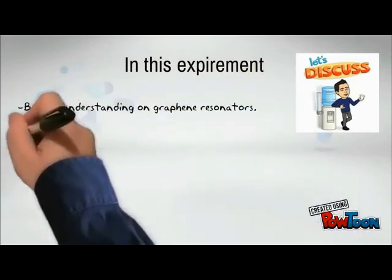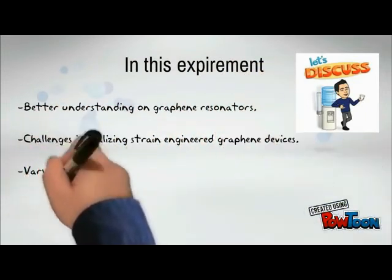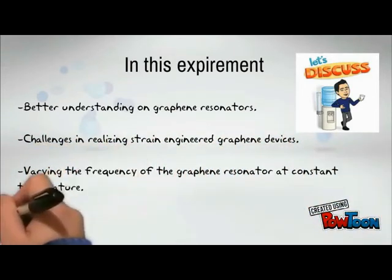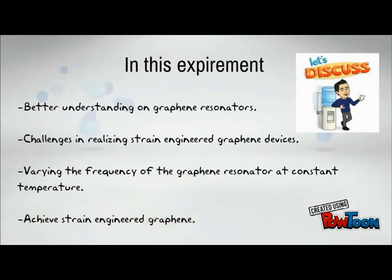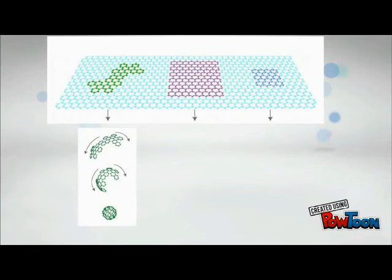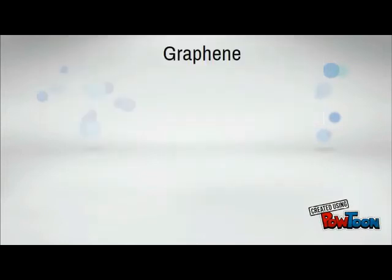In this experiment, we will try to get better understanding on graphene-based electrically actuated and detected resonators, as well as the challenges in realizing strain-engineered graphene devices by varying the frequency of graphene resonators at constant temperature. Strain engineering of graphene is achieved by the mismatch between the negative thermal expansion of graphene and the positive thermal expansion of the substrate.